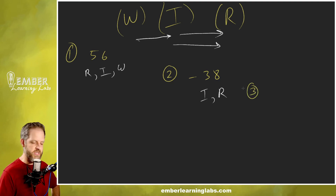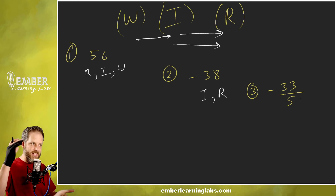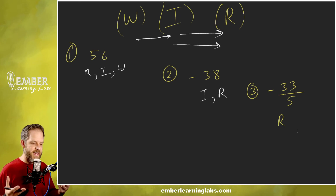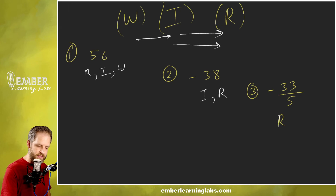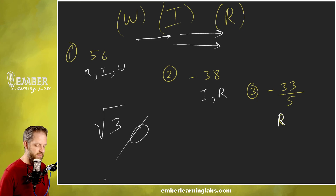Let's do a couple more examples. What about negative 33 over five? Is that a whole number? No, it's a fraction and it's negative. Is it an integer? No, because it's not a negative whole number — integers can be negative whole numbers like negative 38, but this is a fraction. So it's only an R. As a bonus: what about the square root of three? That is none of those sets — it's a real number, but we'll talk about that later.